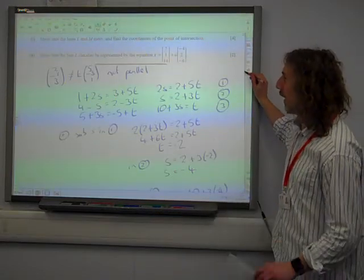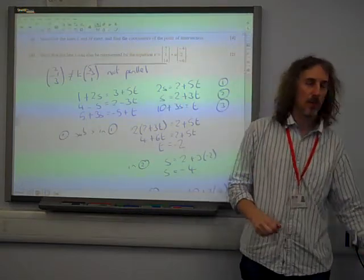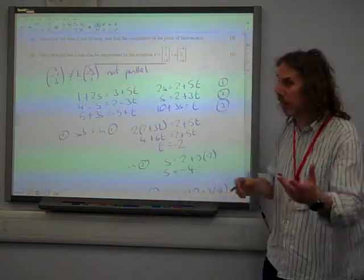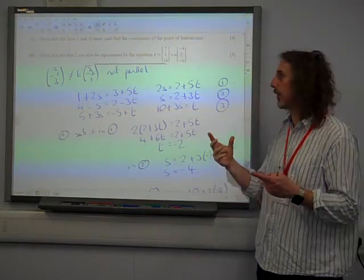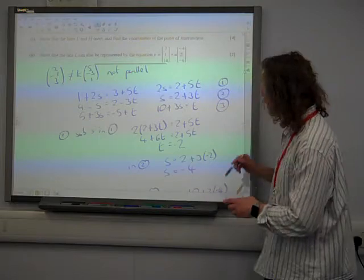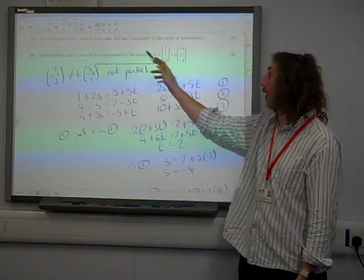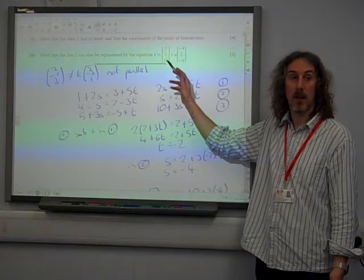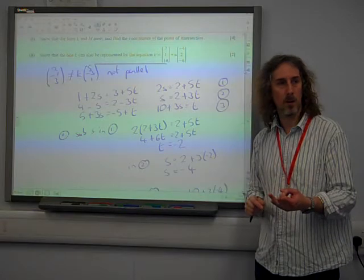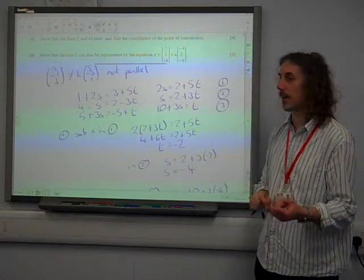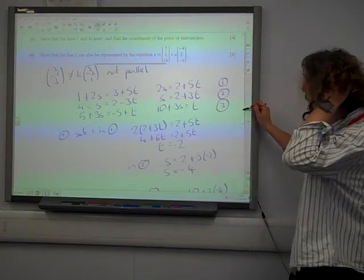Part 2. Show that the line L can also be represented by the equation that. Right. Now, this is a show question. If we think about what we're going to show here, we need a point that lies on the line L, has to go through this line, has to be on this line, and it must be the same direction. So there's two things that we've got to show in order to show that this line is another representation of it.